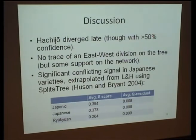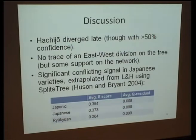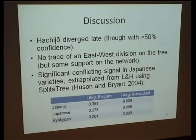We find significant conflicting signal. I extrapolated the Delta score and the Q residual — measures of tree-likeness — from the Lee and Hasegawa data. The Ryukyuan varieties appear fairly tree-like based on Delta scores, while the Japanese varieties appear fairly untree-like. Interestingly, the Q residual scores and the Delta scores do not line up with one another, and as far as I know no one really knows what to make of that. There are no good statistical measures to compare Delta scores or Q residual scores between different varieties.